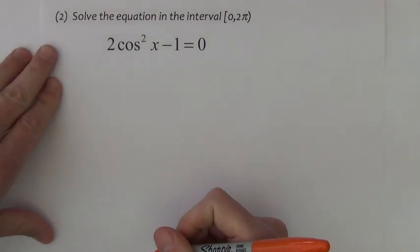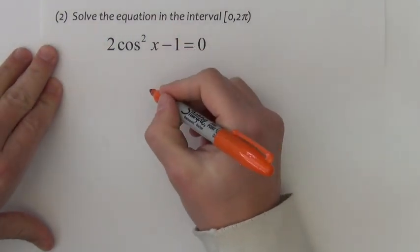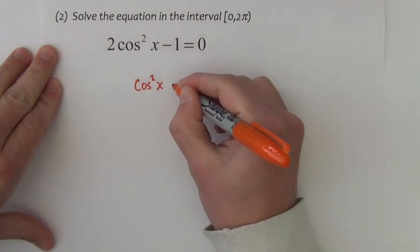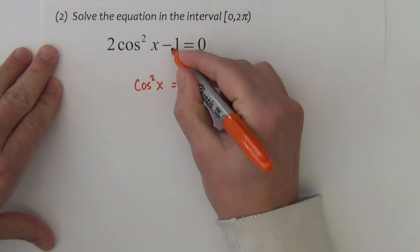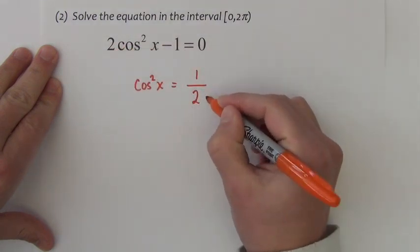Problem 2, same directions as the first one. I'm going to begin by getting the trig function by itself. So cosine squared x equals, I'll do two steps here, add the 1, divide by the 2, so 1 half.